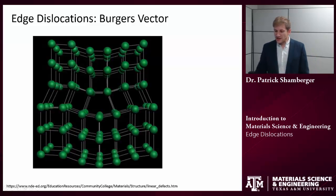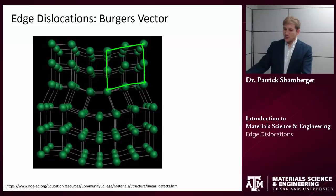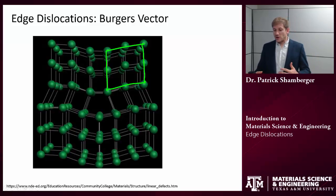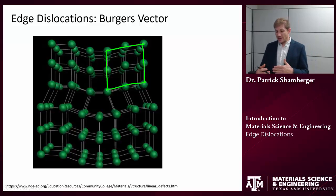The whole idea is that if I drew a circuit in a perfect crystal lattice — so let's focus up here for a second — if I go two to the right, two down, two to the left, and two up, then that will form a closed circuit. If I however tried to do the same thing around a dislocation, that circuit will no longer close. And the Burgers vector is the vector that completes the circuit essentially.